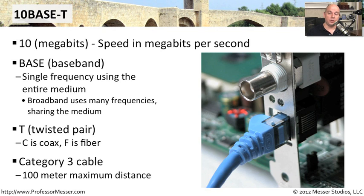When 10BaseT was first introduced, the standard cable we would use is Category 3. Category 1, typically used for voice, was not what we would use for Ethernet — we needed a better cable. To run 10BaseT, we needed Category 3, and that gave us 100 meters of distance from one side to the other for the connection to operate properly.